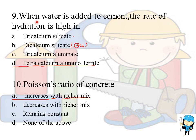When water is added to cement, the rate of hydration is high in tetra calcium alumino ferrite. The rate of hydration is low in dicalcium silicate, so the later strength is always due to the dicalcium silicate.